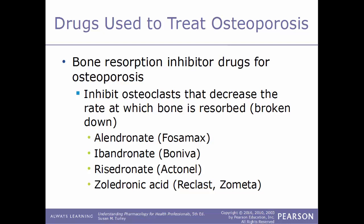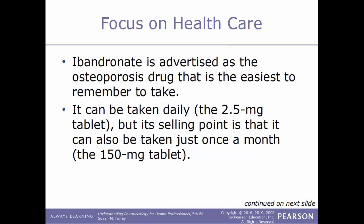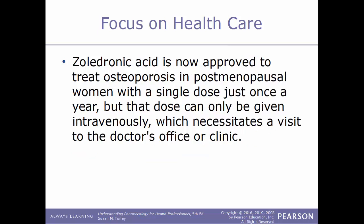One category of drugs used to treat osteoporosis is bone resorption inhibitors. These work by inhibiting osteoclasts, decreasing the rate at which bone is reabsorbed or broken down. Examples include alendronate (Fosamax), ibandronate (Boniva), risedronate (Actonel), and zoledronic acid (Reclast/Zometa). The frequency and routes of administration vary: alendronate and risedronate tablets are taken orally every morning 30 minutes before eating. Ibandronate can be taken daily or just once a month with a 150 mg tablet. Zoledronic acid, approved for postmenopausal osteoporosis, is given as a single intravenous dose once a year, requiring a visit to a doctor's office or clinic.